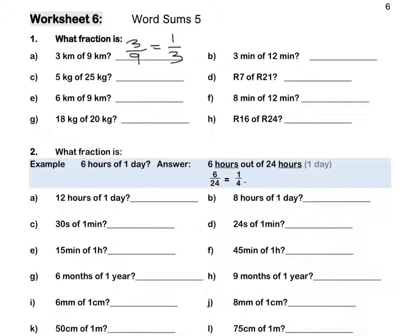What fraction is 8 minutes of 12 minutes? It's 8 out of 12. We can divide top and bottom by 4, which will give us two thirds in simplest form. Pause this video to complete Question 1.